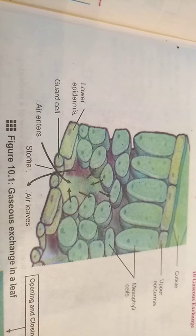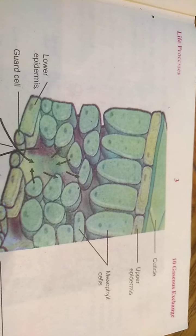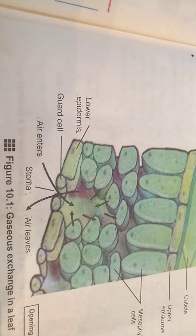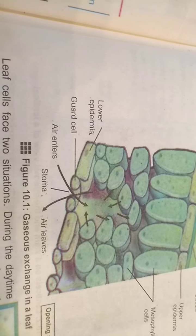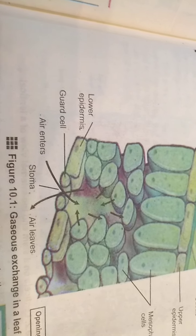Here is a cross-section of the leaf as seen under a microscope. You can see the cuticle, upper epidermis, mesophyll cells, lower epidermis, guard cells, and stomata. Air enters and exits through the stomata, and we know that leaves carry out exchange of gases through this structure.